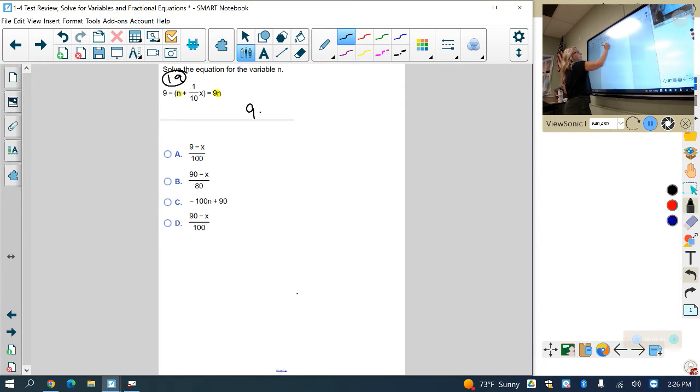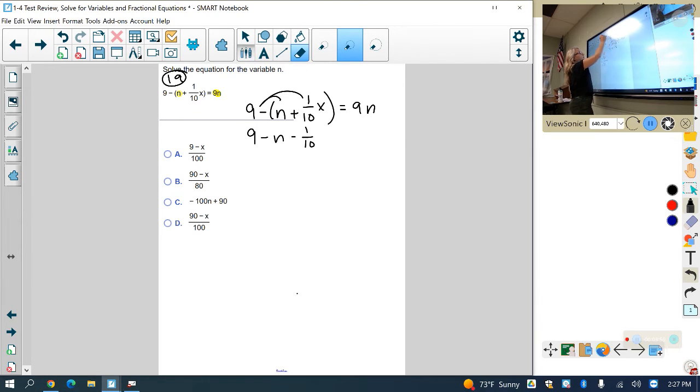So first thing I'm going to do is I'm going to have 9 minus n plus 1 tenth times x equals 9n. So we're going to go ahead and distribute this negative so we can get rid of the parentheses. So I have 9 minus n minus 1 tenth x. There's no n there. Equals 9n.